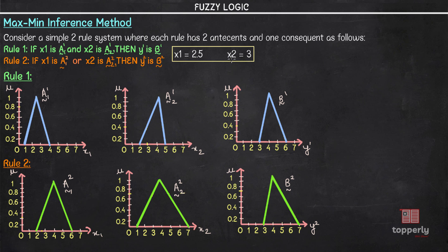We are provided with x1 = 2.5 and x2 = 3, along with the fuzzy sets for A11, A21, B1, A12, A22, and B2, where mu represents the membership values. First, we find the membership value for x1 in Rule 1. Marking 2.5 on the graph and extending the line, we get the corresponding membership value of 0.8. So, 0.8 is the membership value for x1 = 2.5.